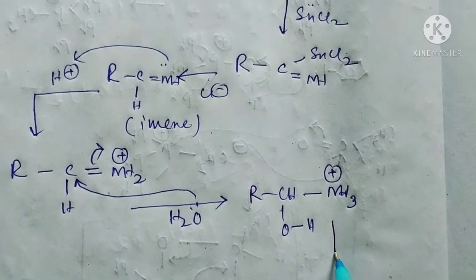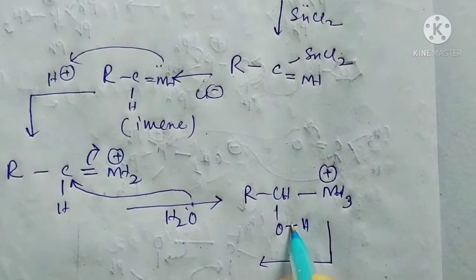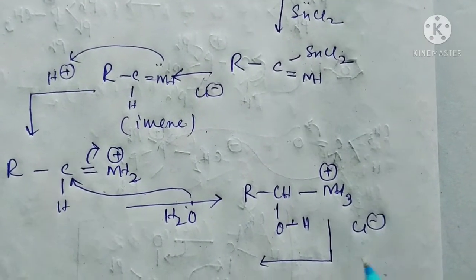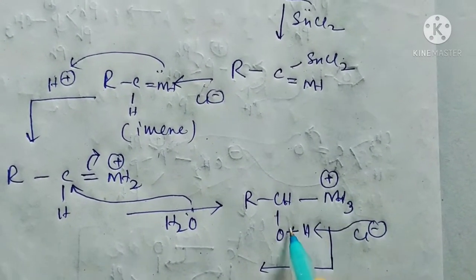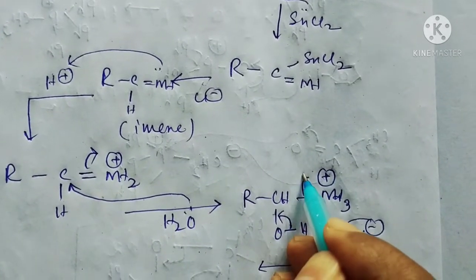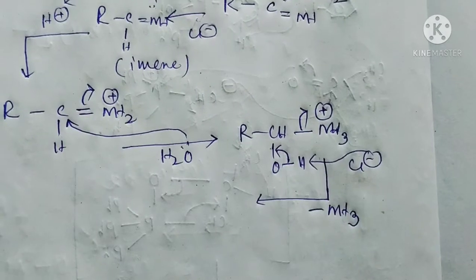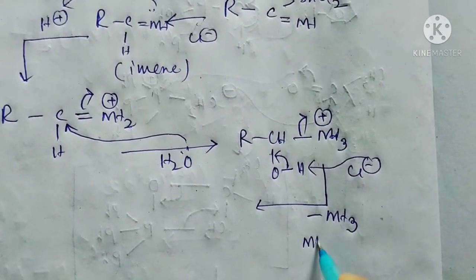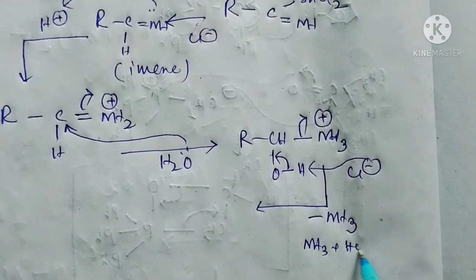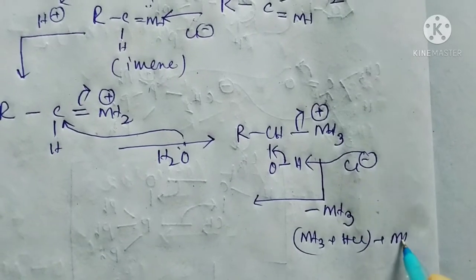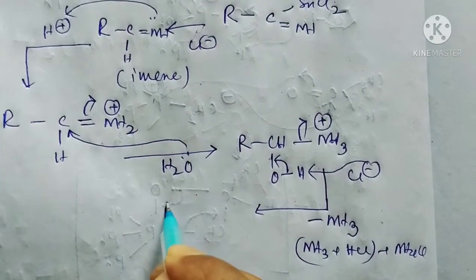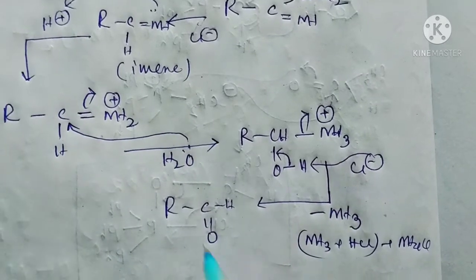Now the very last step, Cl- takes this H+ to form HCl again and then ammonia gas is removed. So from this, ammonia gas is removed from here, which actually ammonia plus HCl reacts to produce ammonium chloride and then this aldehyde forms.